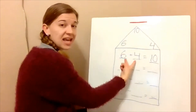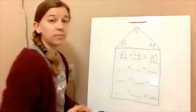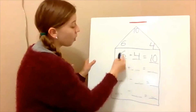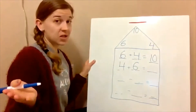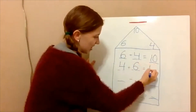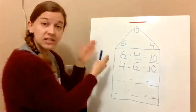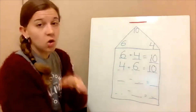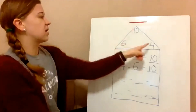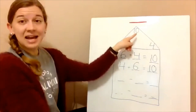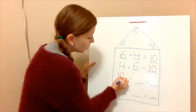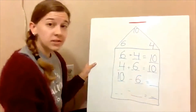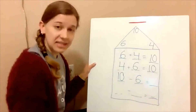Remember, when you're adding you can switch the addends — so let's put four at the beginning: four plus six equals ten. Both of these have six, four, and ten. Now we move to subtraction. Remember, you always start with the greatest number — out of these three, that's ten. So we'll do ten minus six: ten minus six equals four. If you have ten and you take away six, you're left with four.